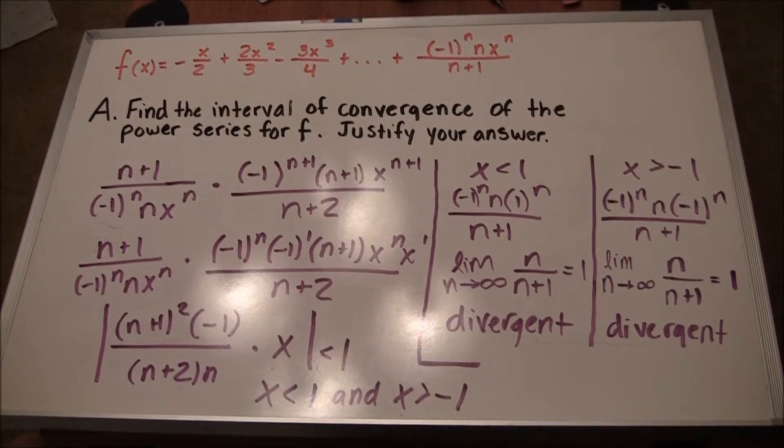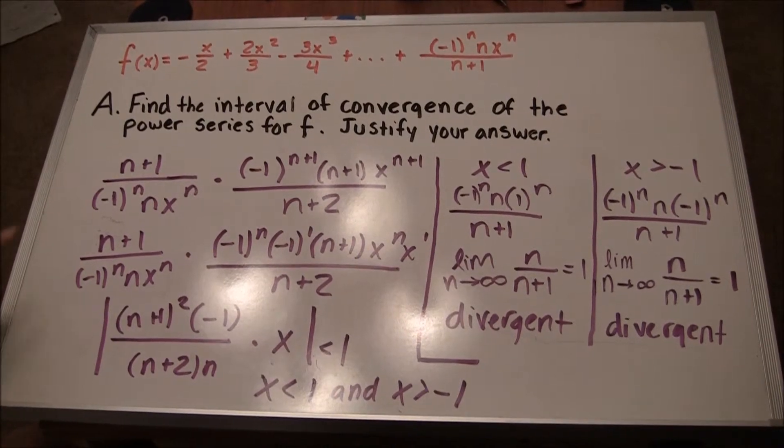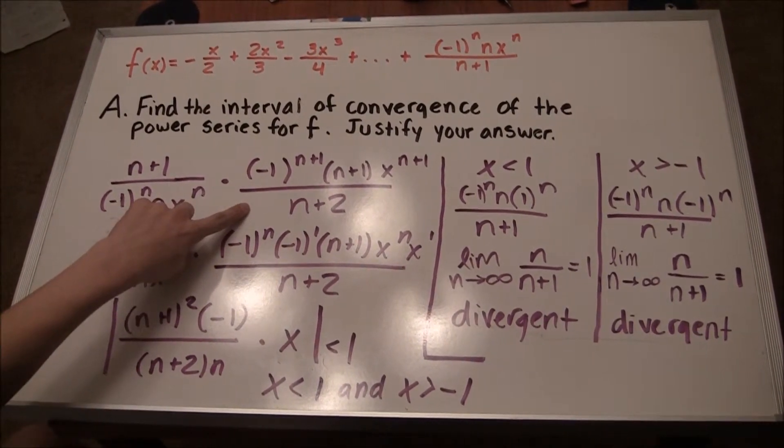For the ratio test, you must first flip the original series, then multiply it by the original f of x, so the equation reads as follows.